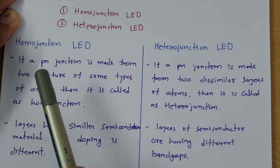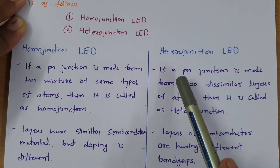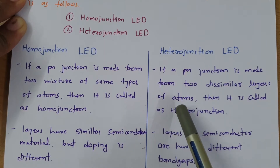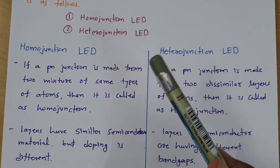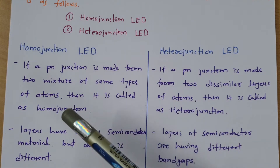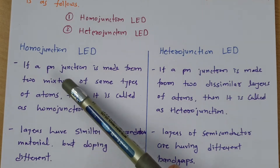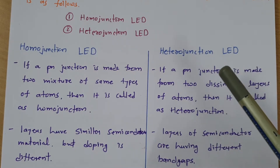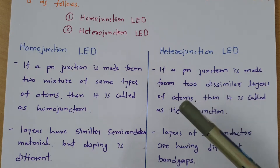In that case, we say that PN junction is a homo junction PN junction. In the case of hetero junction, the PN junction is made up of two different layers of different atoms. That PN junction will be a hetero junction PN junction. In hetero junctions, you will have semiconductor materials with different band gaps, so you need two different layers with different atoms.